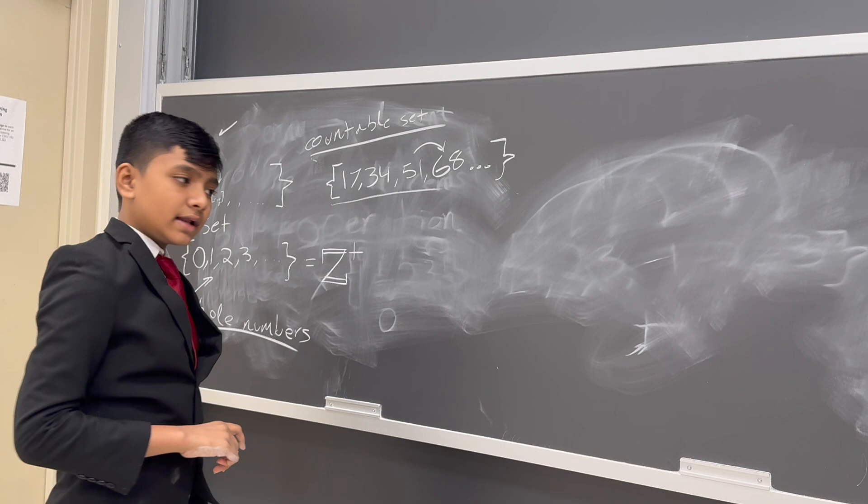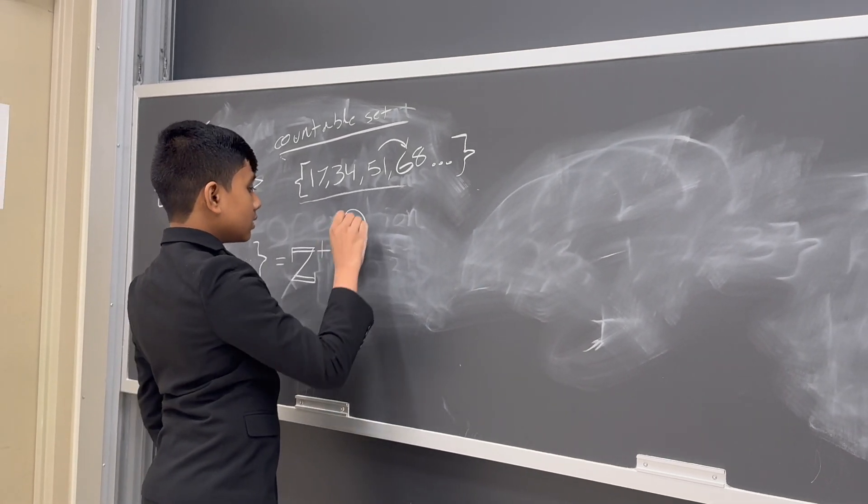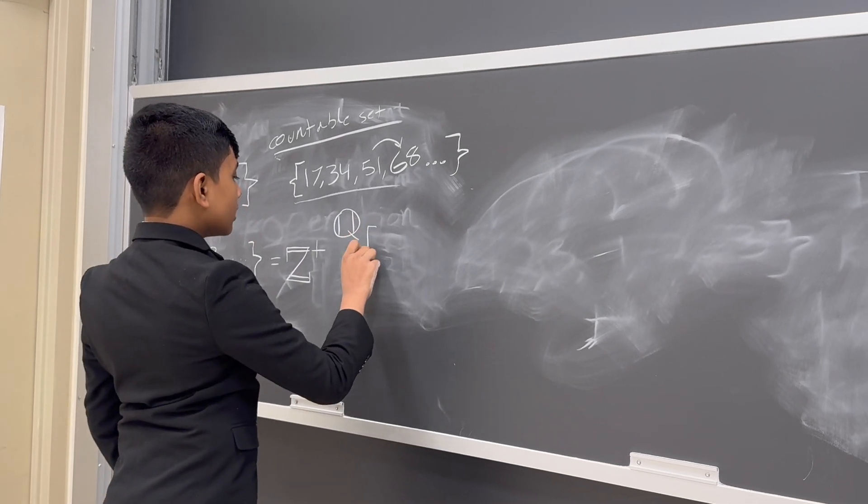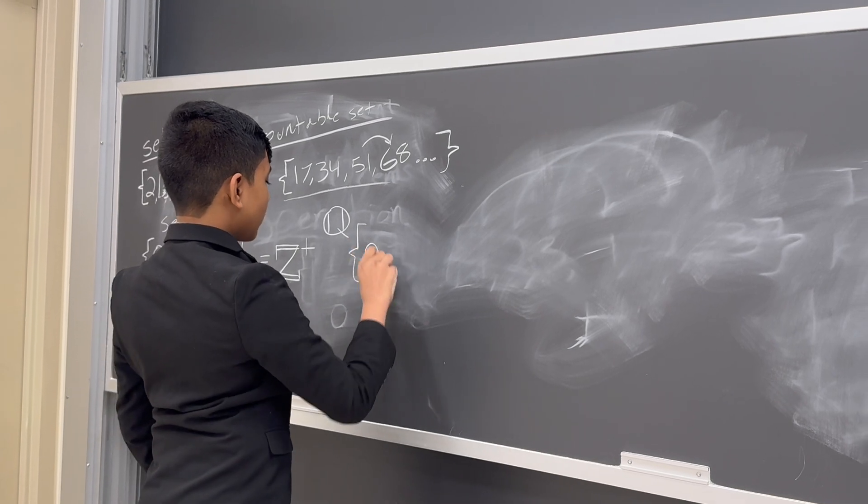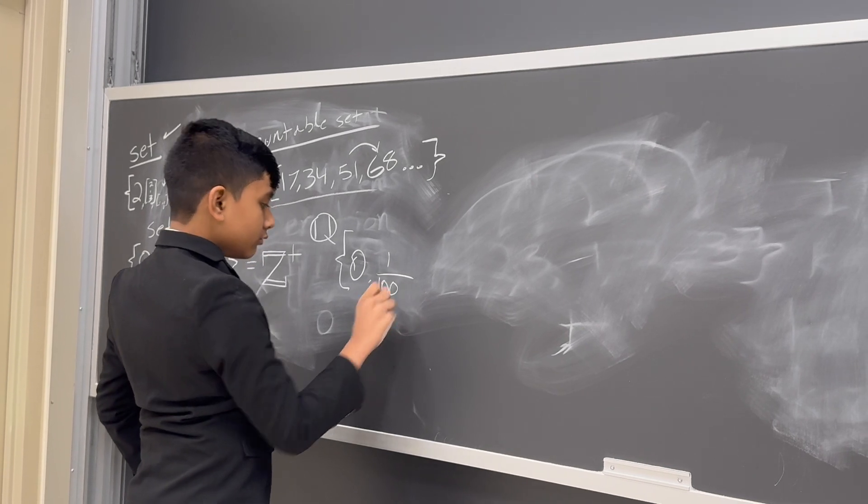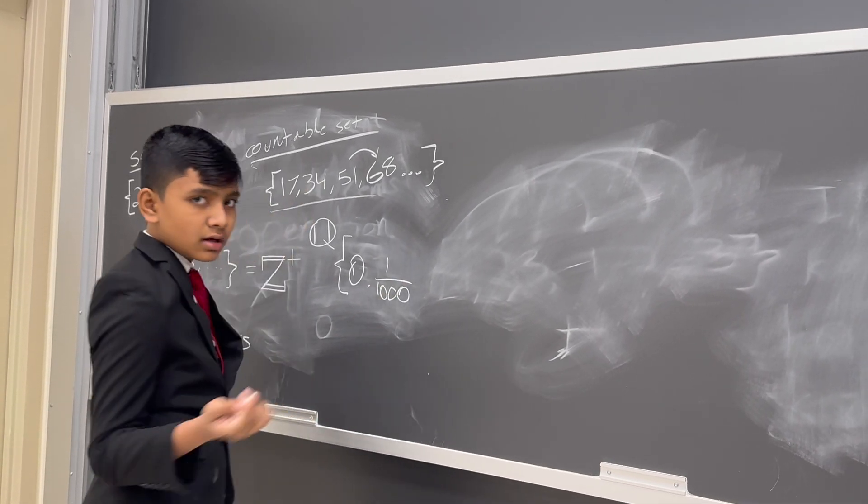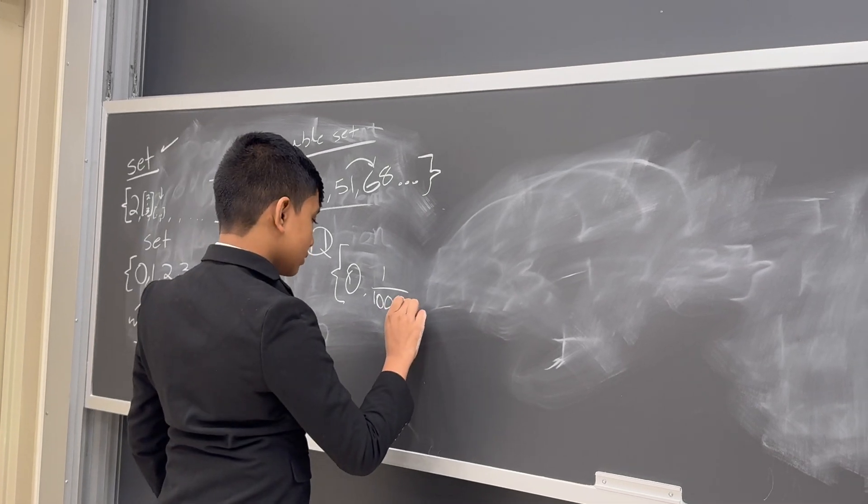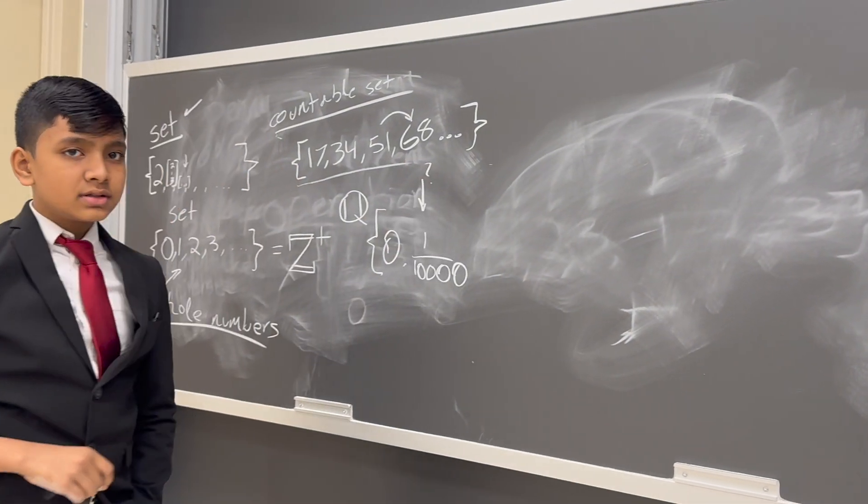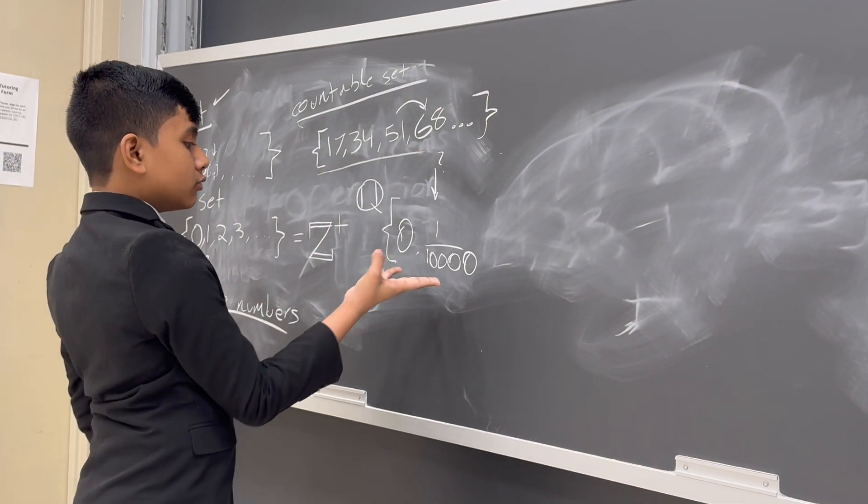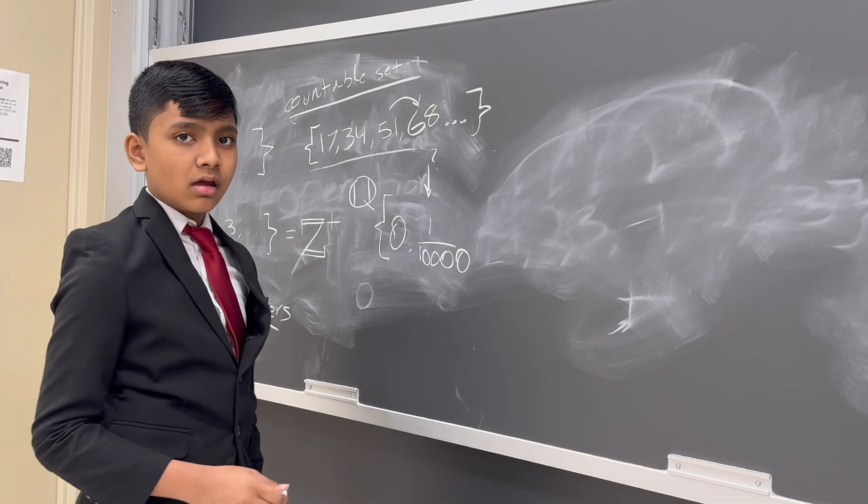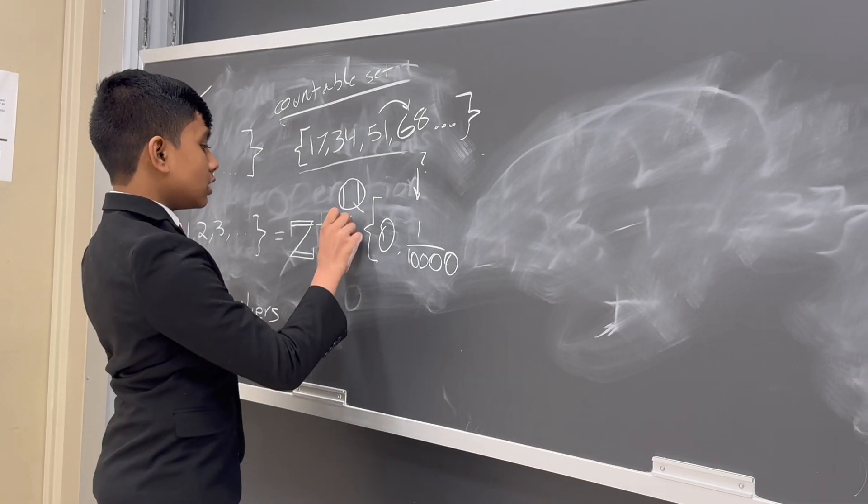But what about an uncountable set? An uncountable set is something like the rational numbers, where you do not know what the next element is. So, 0 is a rational number, but what comes next? Is it 1 over 100? No, there's something smaller than that. 1,000? No, there's obviously something smaller than that. 10,000? And this keeps going and going. You don't quite know what the next element is, given one element. You just know what is in the set and what is not in the set. So, this constitutes most sets.